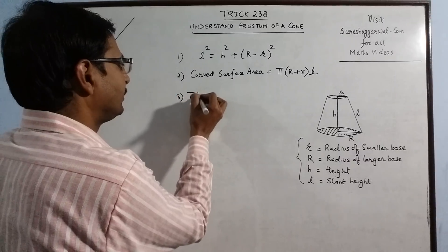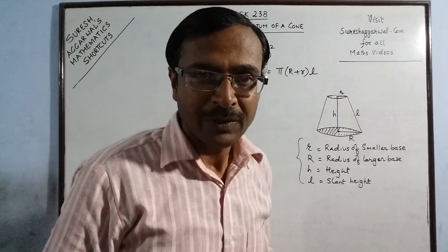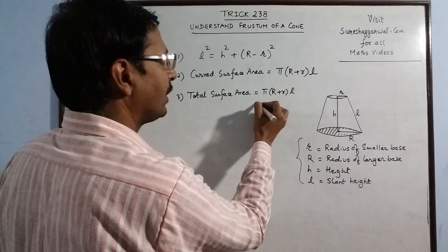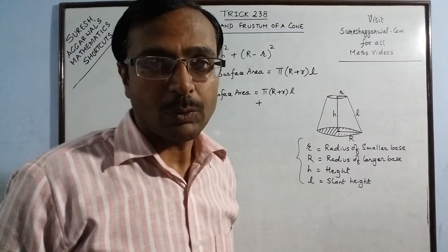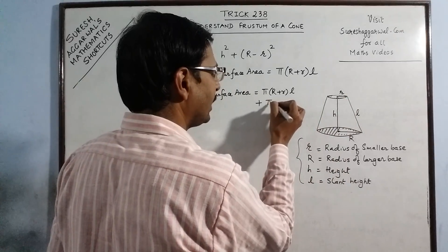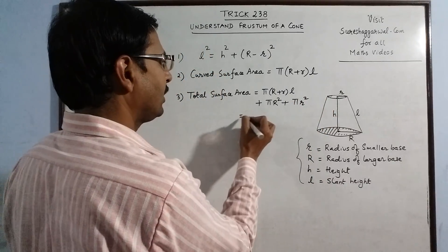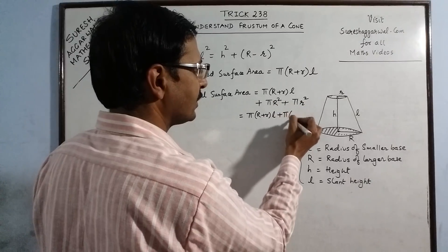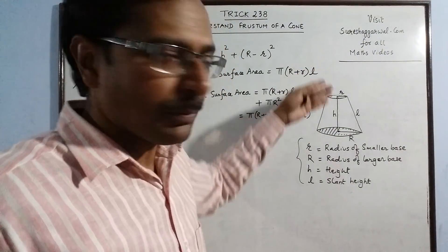Coming to the total surface area — total surface area means the entire area visible on this solid. The curved surface area π(R + r)L is part of the total surface area, and we add the areas of the two circular bases. The area of each circle is π times the square of its radius. So we add πR² for the larger base and πr² for the upper smaller base. Taking pi as common with the curved surface area term gives the complete formula for the total surface area of a closed frustum — one closed from both top and bottom.